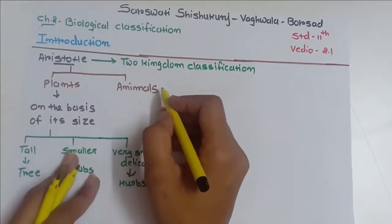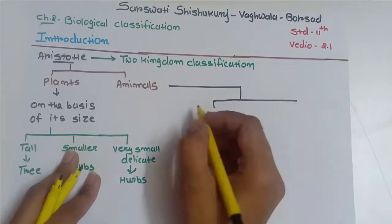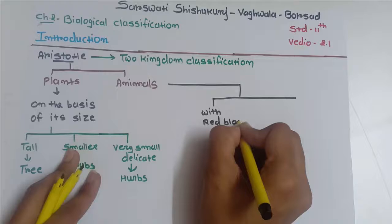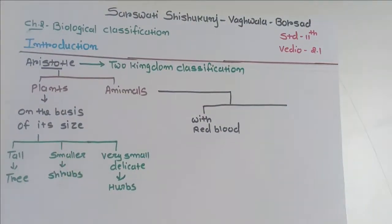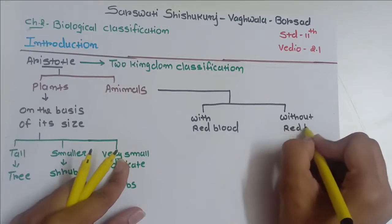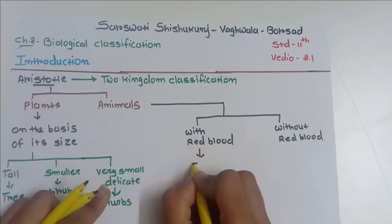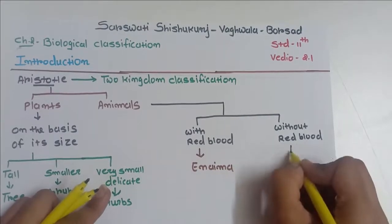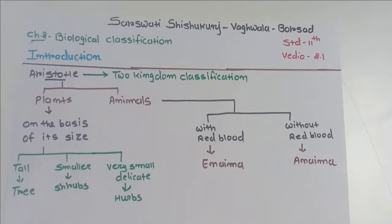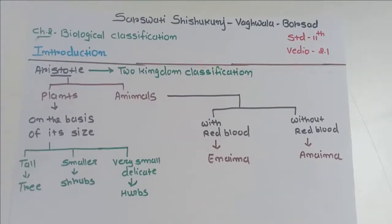Aristotle also classified the animal kingdom into two categories. First, animals which have red blood, and second, animals without red blood. Animals with red blood were known as Enema and animals without red blood were known as Anemia. So Aristotle divided the animal kingdom into two categories: Anemia and Enema.